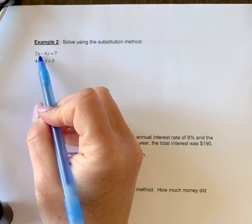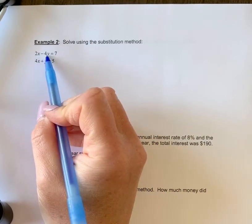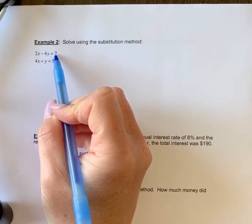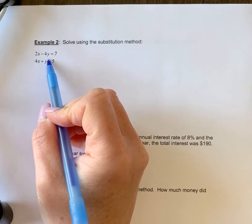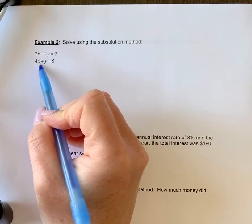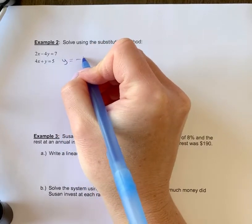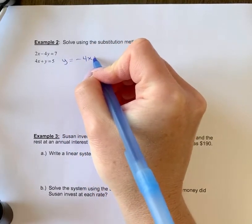You don't really want to pick the 2x or the 4y because I'd have to divide off and then the 7 isn't divisible. So I'm going to pick this y because it's already by itself. I'm just going to move that 4x over. We're going to rewrite this as y equals negative 4x plus 5.